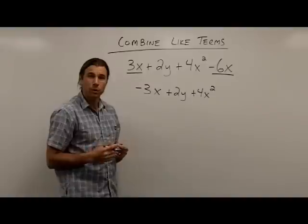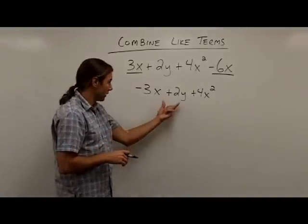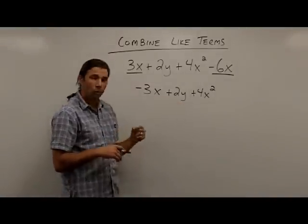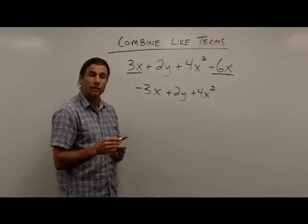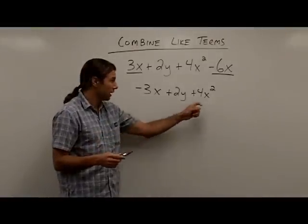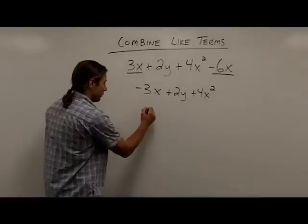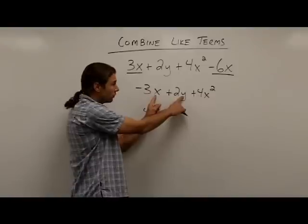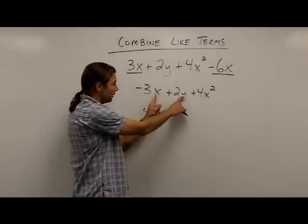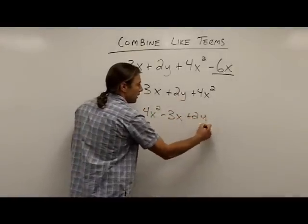So this expression is as simple as it can be. One other thing that I want to do, and this answer is perfectly fine, but what we typically do is we try to write our answers in descending order, which means we write the highest powered exponent, the highest powered variable first, which is my 4x squared. So I would write 4x squared, and now both of these variables kind of tie, so it wouldn't really matter the order in which I write these. I'll write the negative 3x next, and the plus 2y.